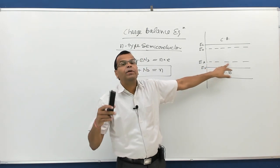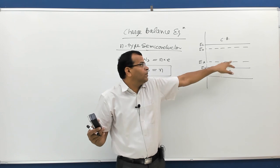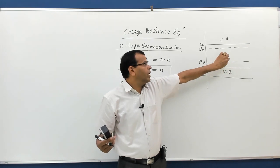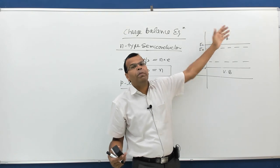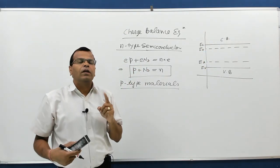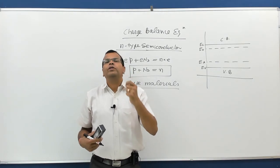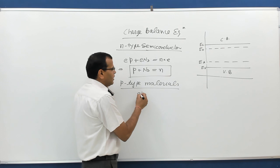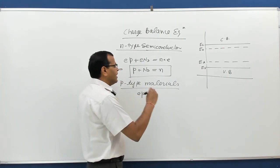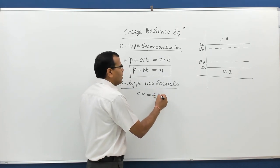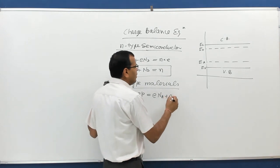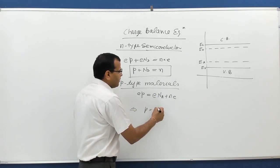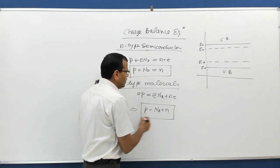For p-type semiconductors, the acceptor impurity attains a negative charge because an electron from the valence band jumps to the acceptor level. The total positive charge in the valence band must equal the negative charge at the acceptor level plus negative charges in the conduction band. This gives p = Na + n as the charge balance equation for p-type material.